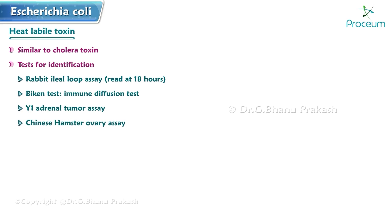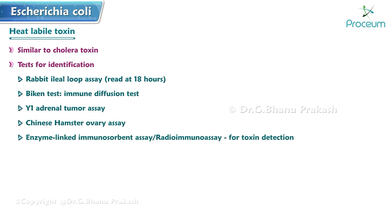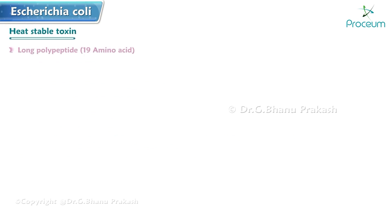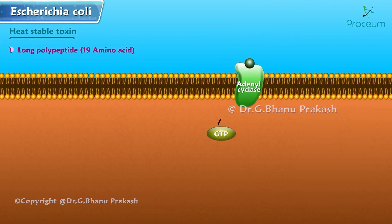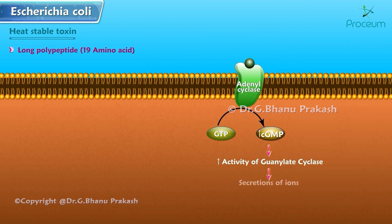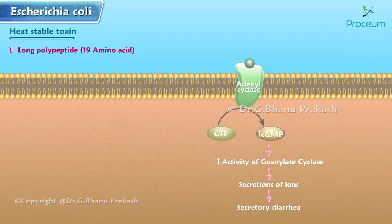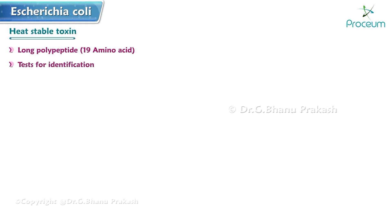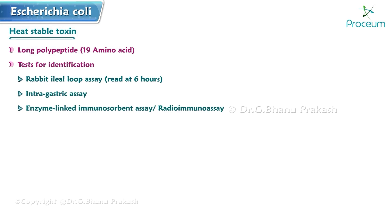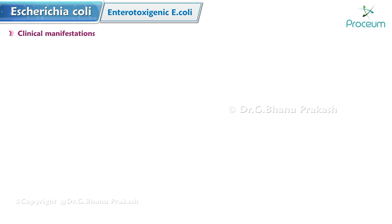Additional tests for heat labile toxin include: Chinese hamster ovary assay, ELISA or radioimmunoassay for toxin detection, and PCR or gene probe detection. Heat stable toxin is a 19 amino acid long polypeptide. It acts by increasing cyclic GMP (cGMP) by directly increasing the activity of guanylate cyclase, leading to secretion of ions and secretory diarrhea. For heat stable toxin identification: rabbit ileal loop assay (read at 6 hours), intragastric assay, ELISA or radioimmunoassay, and PCR or gene probes.